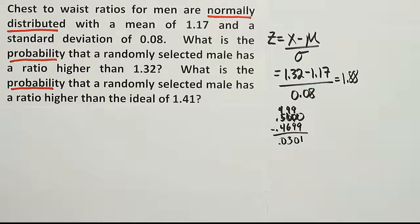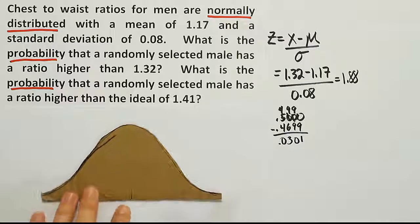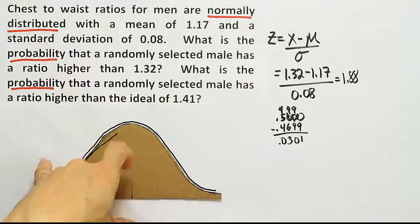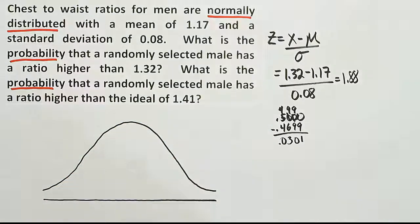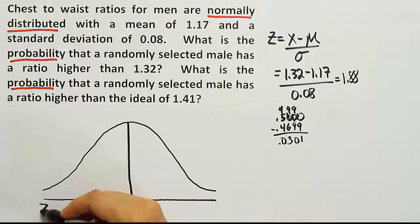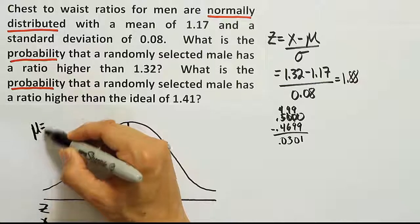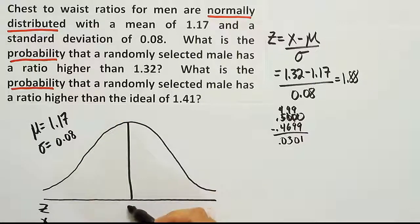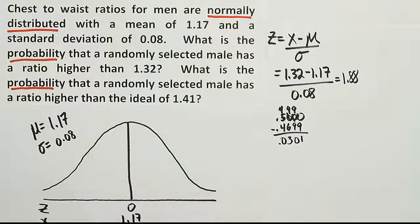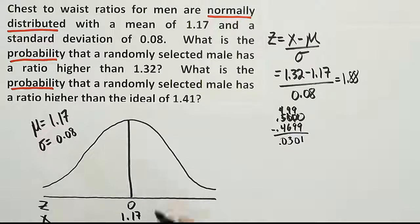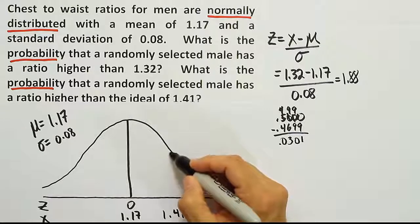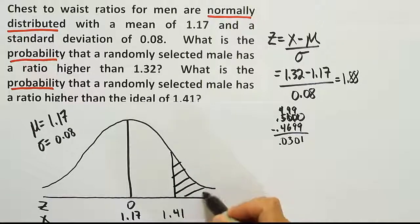Okay, so once again I'm going to draw my bell curve. And we'll label the mean and the standard deviation like we always do. So 1.17 again and 0.08. The mean for z is 0. The mean again for x is 1.17. And then we're going to be looking for the probability that someone is higher than the ideal of 1.41. So 1.41 we'll draw over here. And higher than that again is the area in the tail.